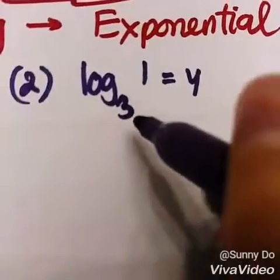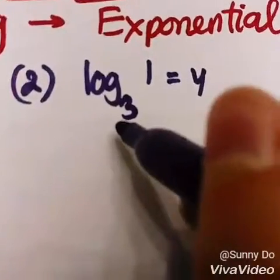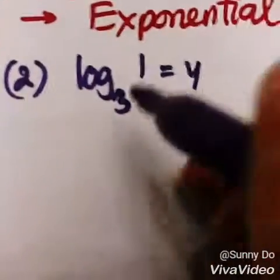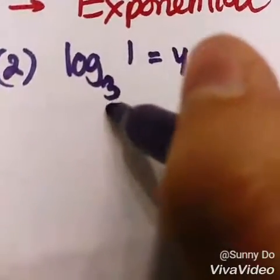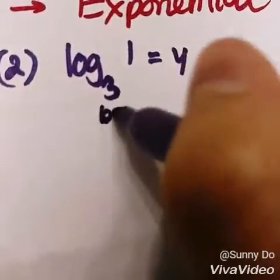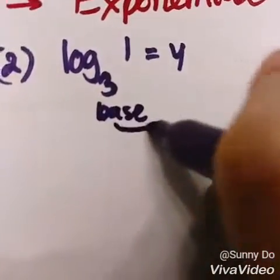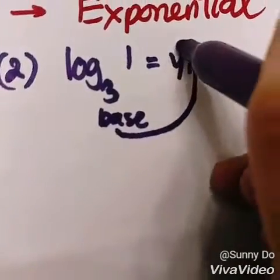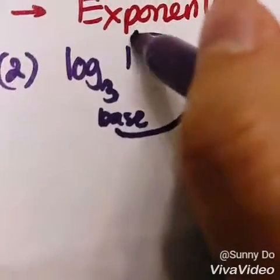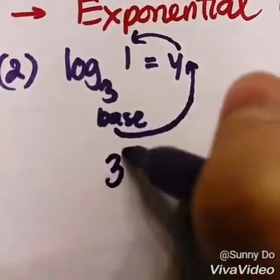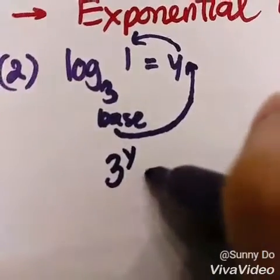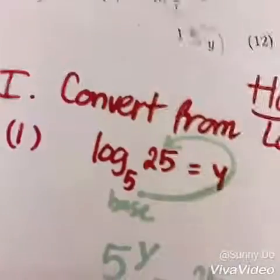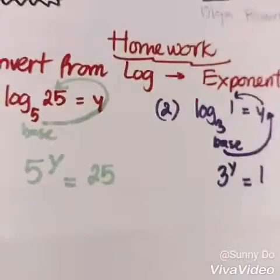We're going to do the same thing for number two: log base 3 of 1 equals y. So we're going to start at your base, which is 3. Draw it to the other side and then back to this side. So 3 to the power of y equals 1. That's it — that's how you do part one.